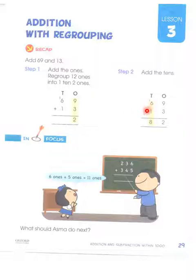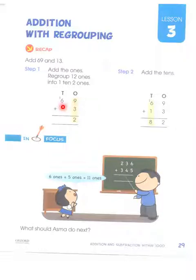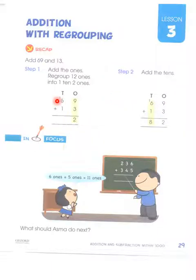We have already studied this. You already know how we add 69 and 13. In 69, the 9 are the ones and 6 are the tens. In 13, the 3 are the ones and 1 is the ten. In the first step, we added the ones — 9 and 3 — which gave us 12. We wrote 2 there and carried 1 above the 6, so we know that in the next step we also add 1 to the 6.